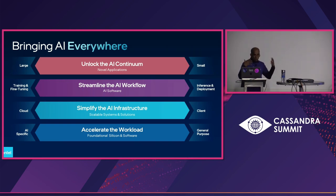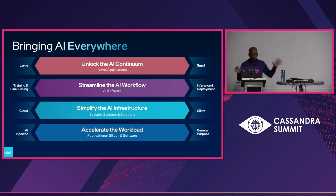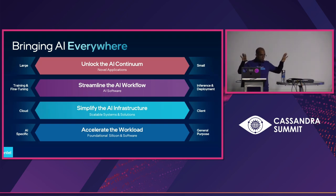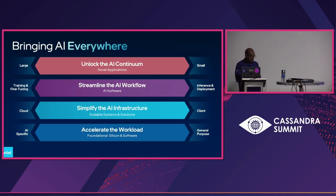Those are the basic pillars on how Intel operates. The three key elements are: how do we help you accelerate the workload with our foundational silicon and software — spanning general purpose CPU, targeted GPU, and NPU; then the AI infrastructure layer covering the projects we contribute to across cloud, client, and edge; and finally streamlining the AI workflow to enable seamless development and deployment productivity.